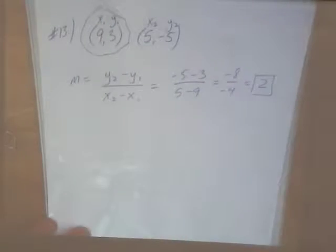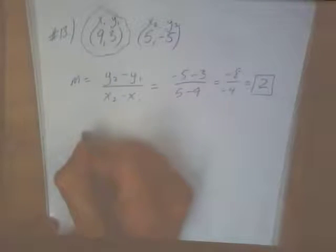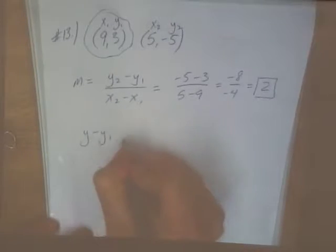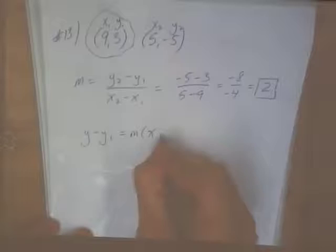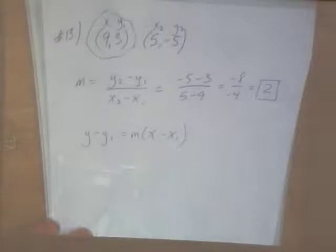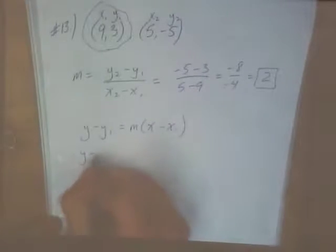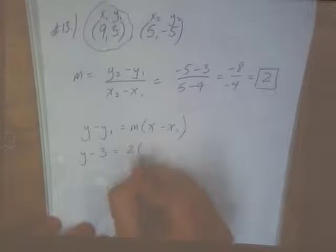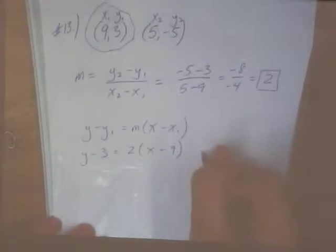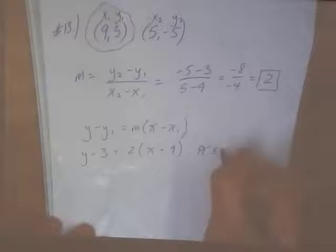Slope is 2. So we've got a point and a slope now. What form should I go to to write this equation? Point slope. Point slope. We have a point and a slope, so start with point slope form. Y minus Y1 equals M times X minus X1. So we'll plug in our X1, Y1 and we'll plug in our M. So it'll be Y minus 3 equals 2 times X minus 9. If they want it in point slope form, you're done.